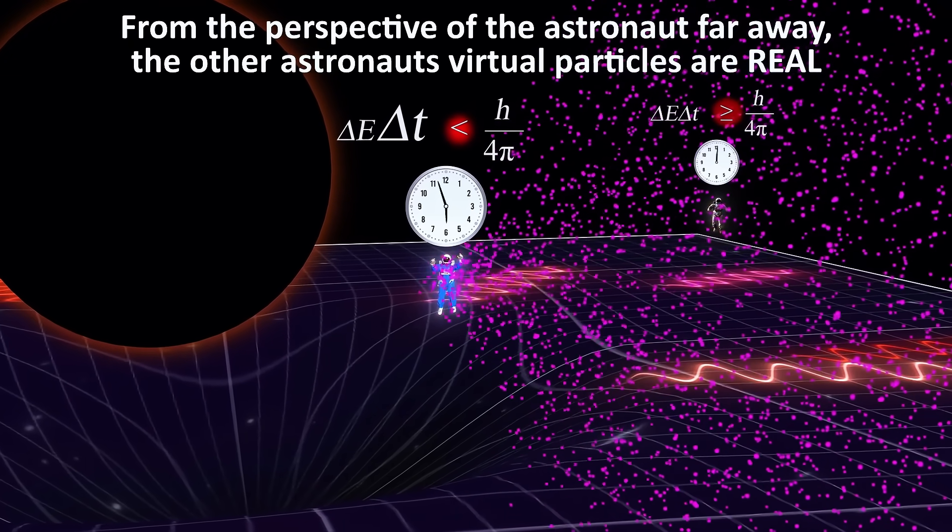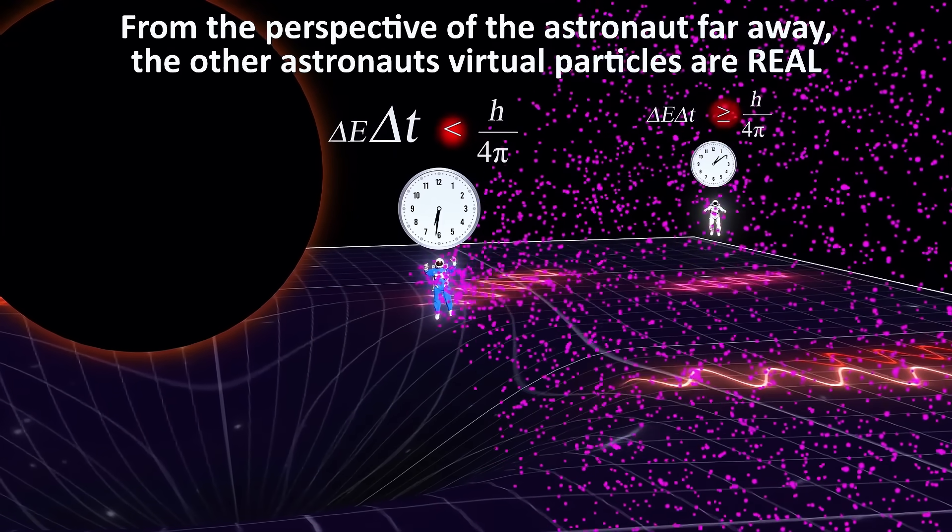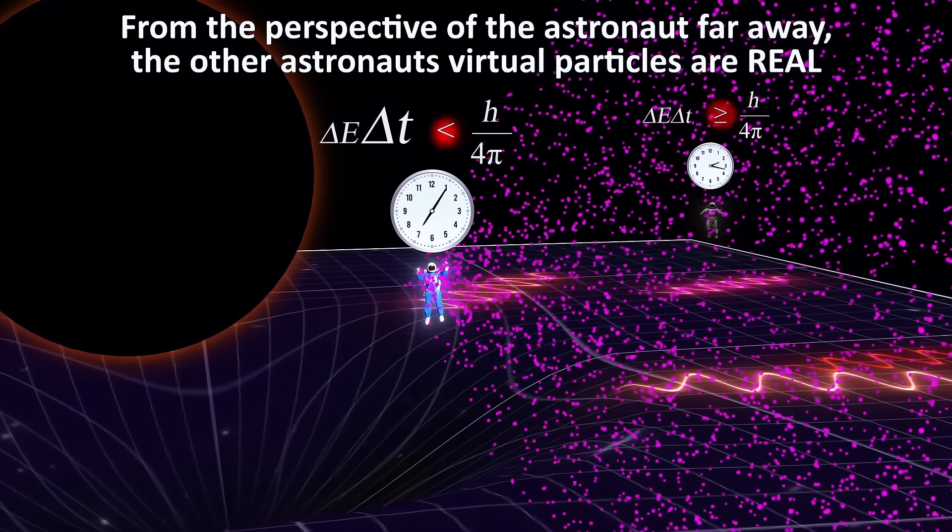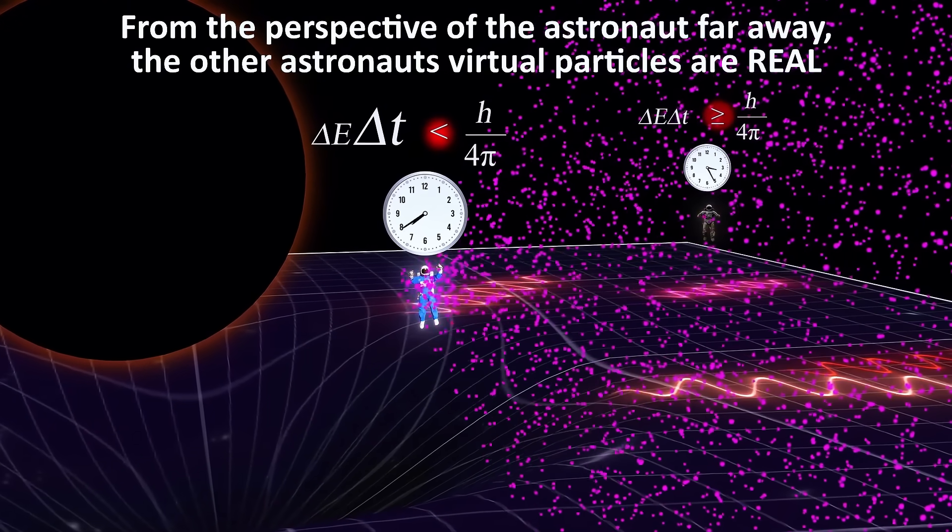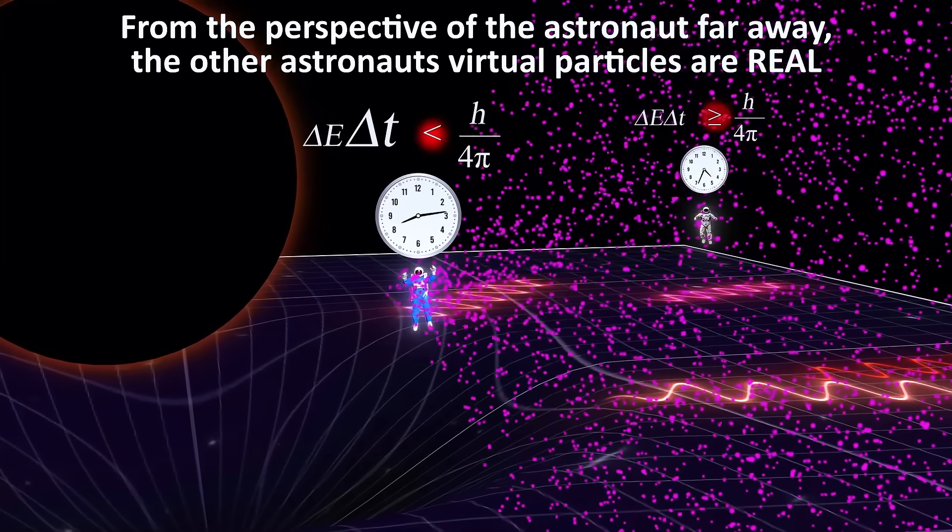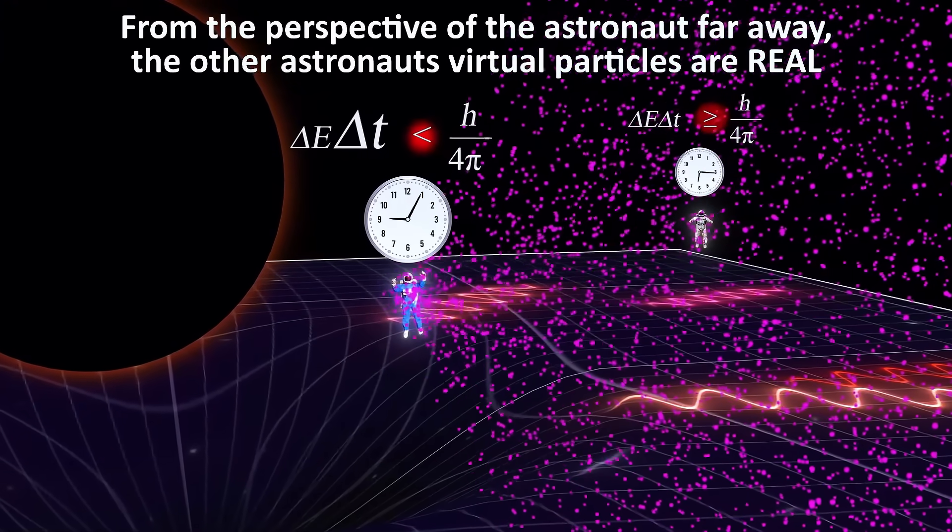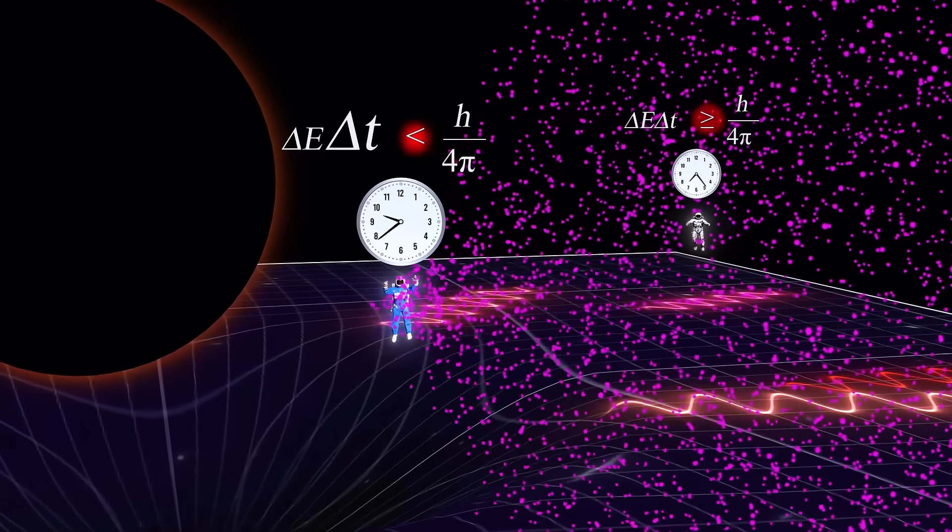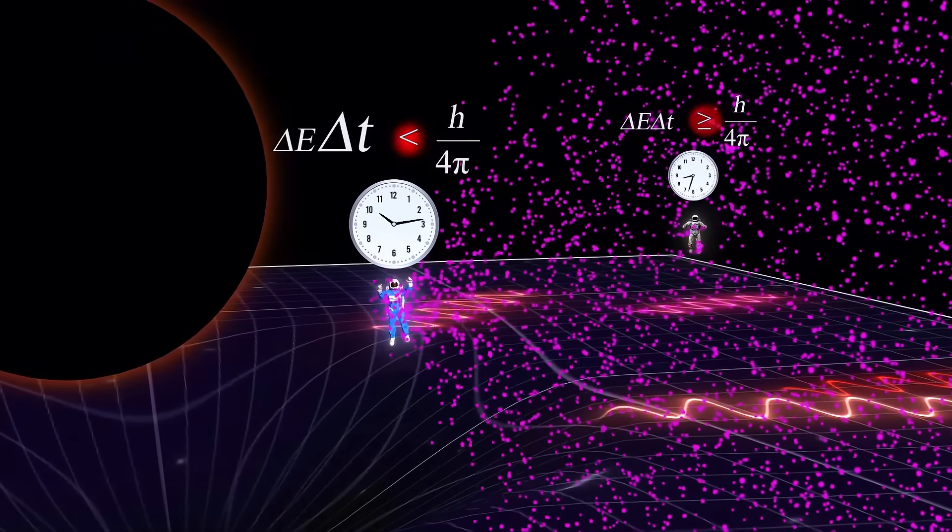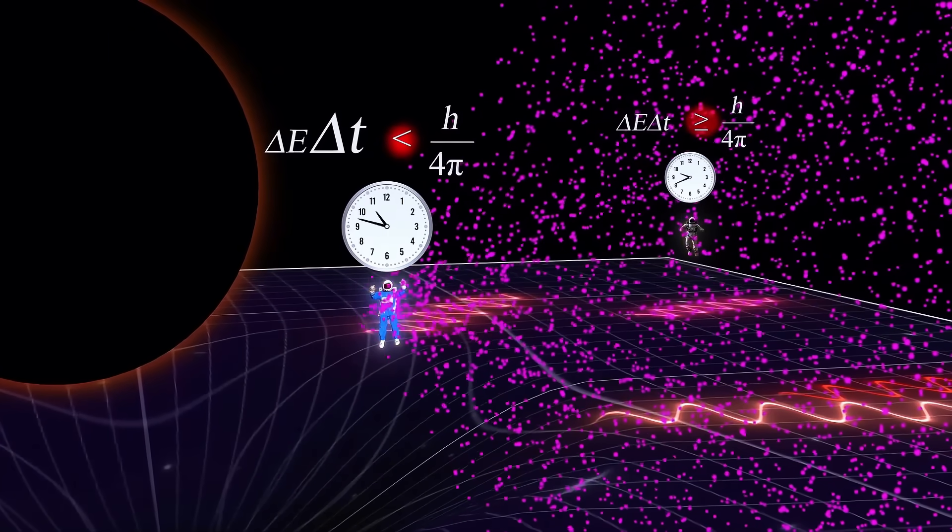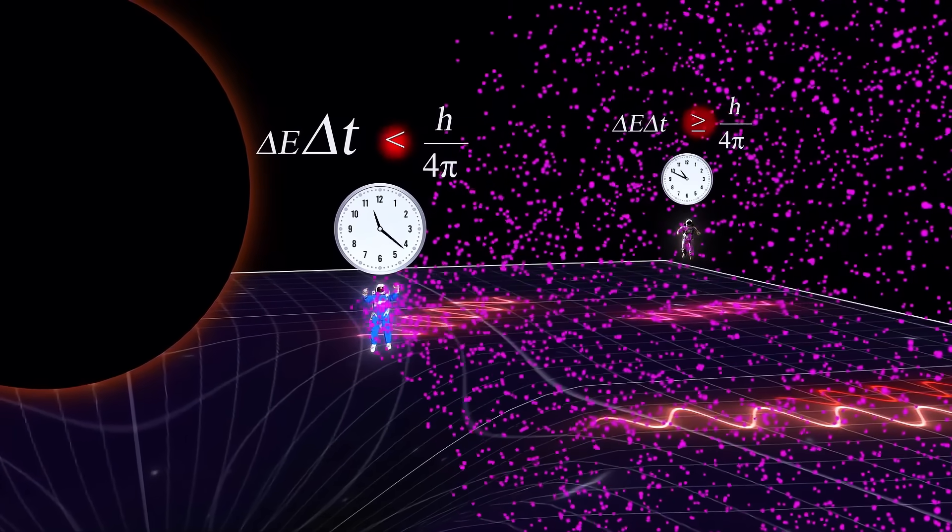To the person standing far away, these particles will obey the uncertainty equation because the product of the uncertainties will be greater than or equal to h over 4 pi from the perspective of far away. But for someone locally, those same particles will be under the uncertainty equation, so they will perceive those same particles to be virtual.